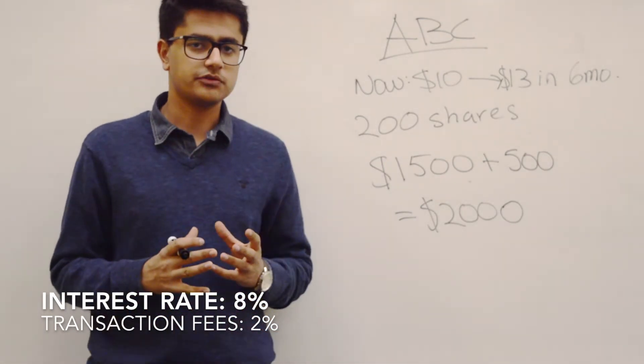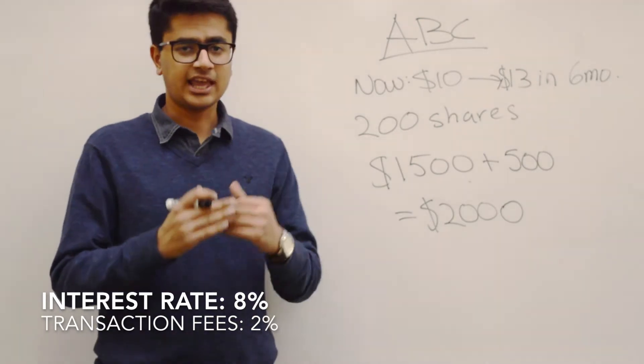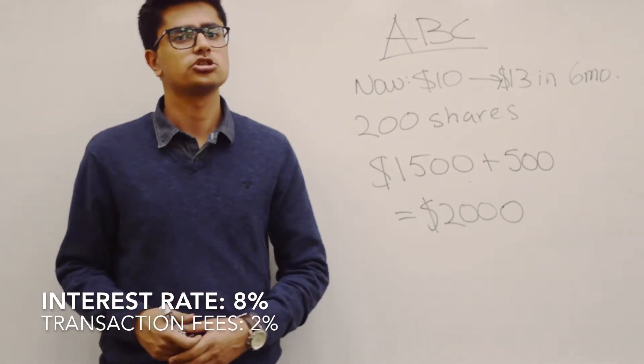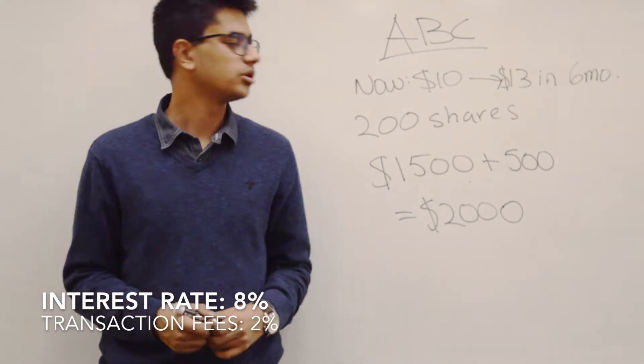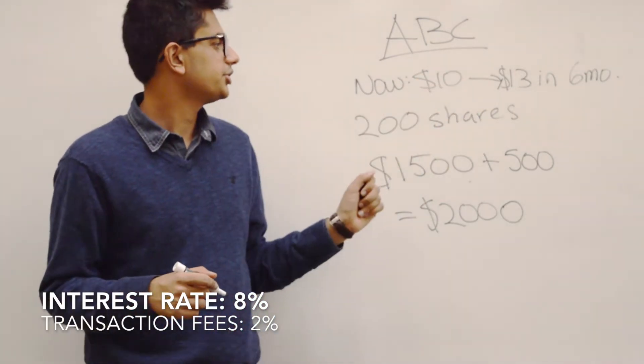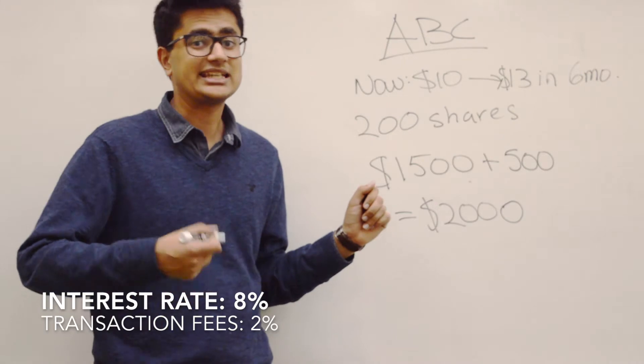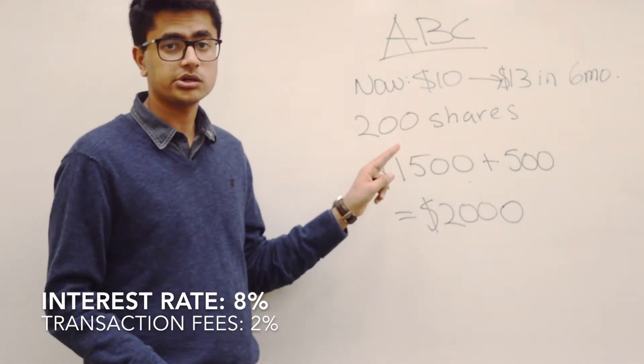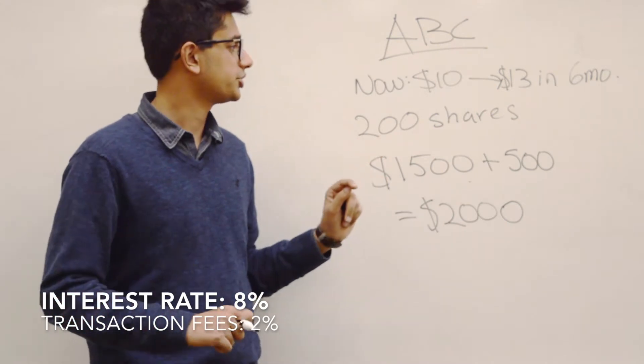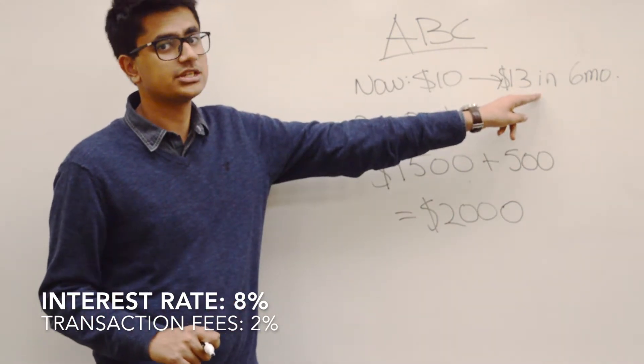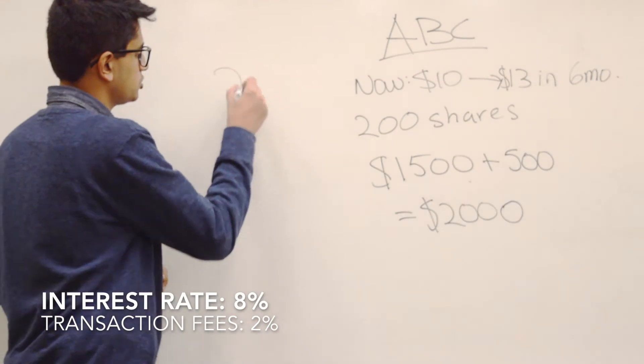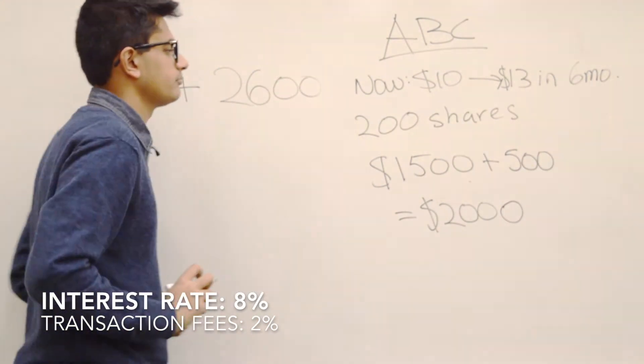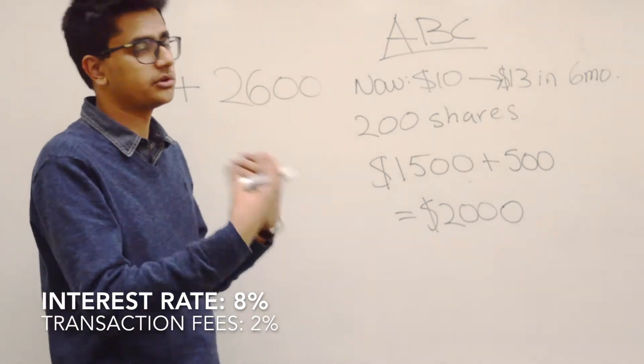The basic approach to solving these problems is calculating or keeping track of cash inflows and outflows. What is the cash inflow? Well, the only cash inflow here is when you sell the shares 6 months from now. You bought 200 shares, 6 months from now you're going to have 200 shares. And you're going to sell them at $13 a share. So you're actually going to end up having $2,600.